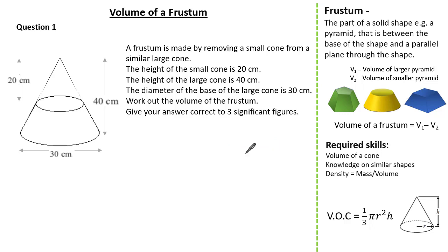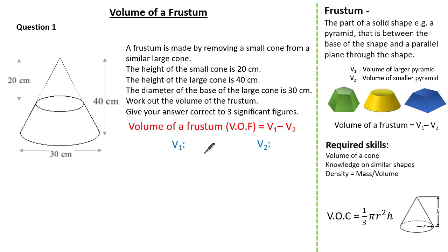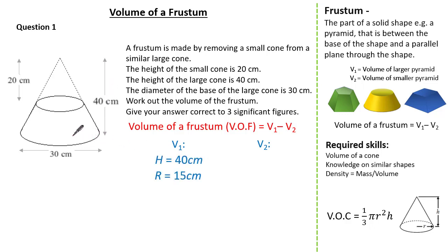To work out the volume of a frustum it is simply the volume of the larger cone subtract the volume of the smaller cone. So let's work out the volumes of our two separate cones. Looking at our larger cone, we need to identify our radius and our height. For our larger cone, the height is 40 cm and the radius is 15 cm.